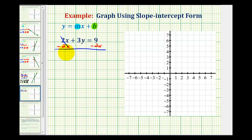This would be zero, we would have 3y equals, we'll write the x term first, so this will be negative 2x plus 9 and then to solve for y, we'll have to divide everything by 3.